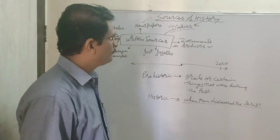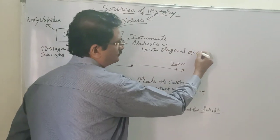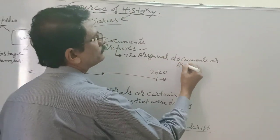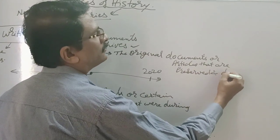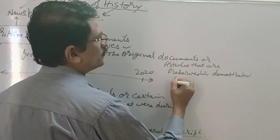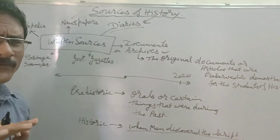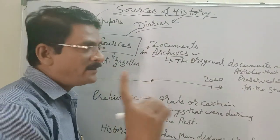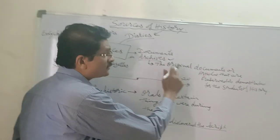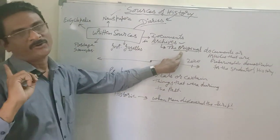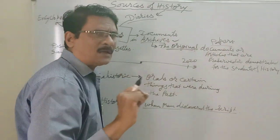After that, we have documents in archives. Archives means the original documents or articles that are preserved and demonstrated for students of history. This is one of the most important criteria. Keep it in mind — there is a difference between archives and a museum. In a museum, we have many sources or replicas that can be put. But in archives, the original ones are demonstrated. Once the original one is lost, it is lost forever. That is why each and every document, each and every paper, is preserved there.